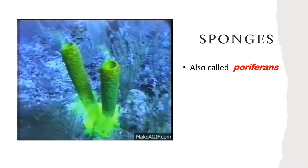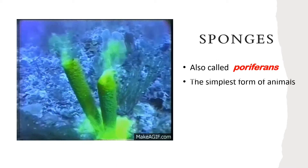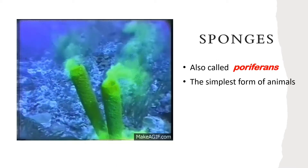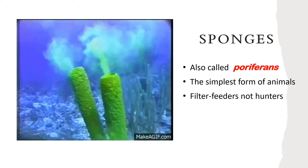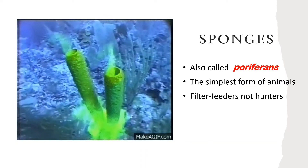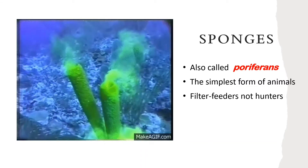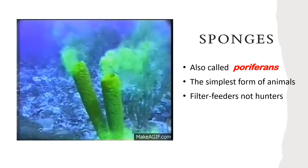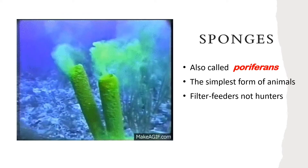Sponges, also called poriferans, are the simplest form of animals. Sponges are not hunters. Rather, they are filter feeders.